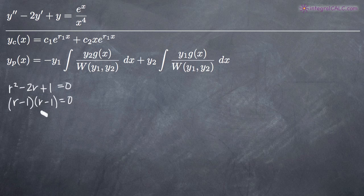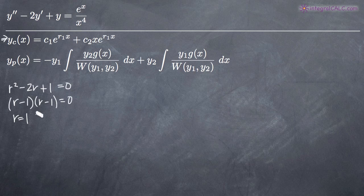We get r minus 1 times r minus 1 equals zero. We have two solutions, but they are identical — it's really just the same solution of r equals 1. This means we use the complementary solution formula for equal real roots, where you have r sub one and r sub one equal to each other.